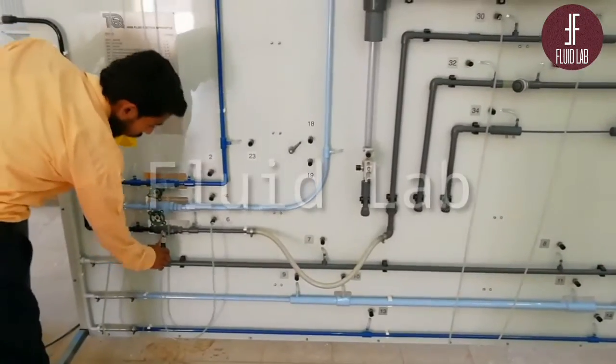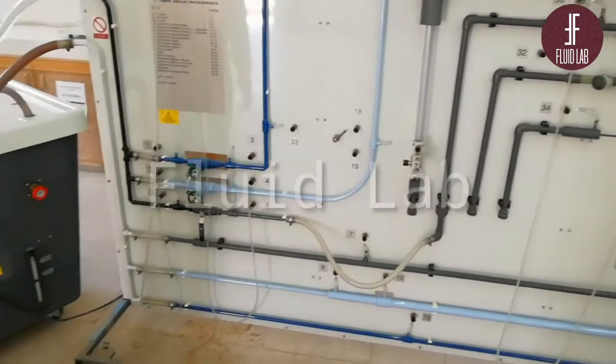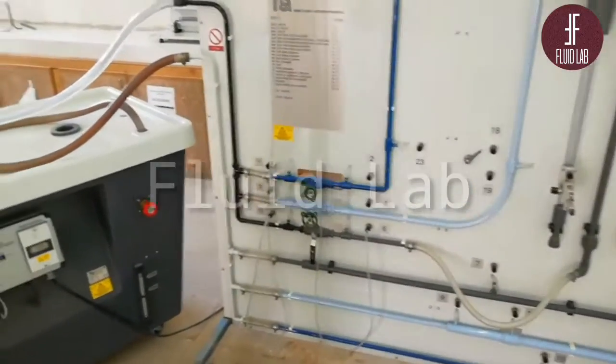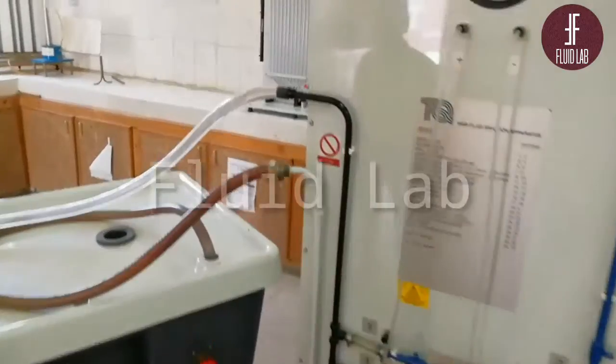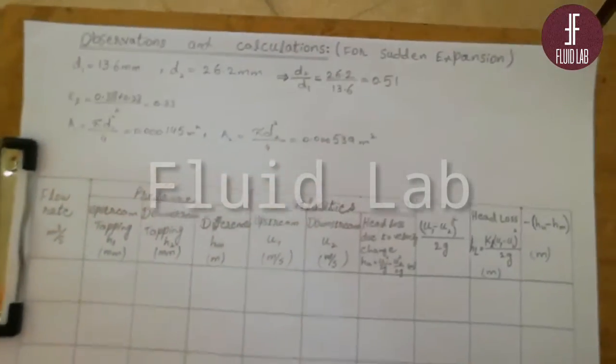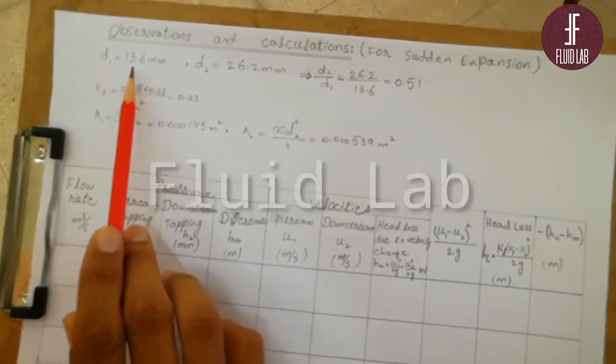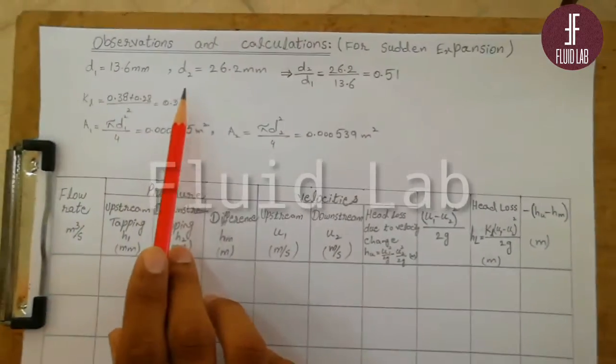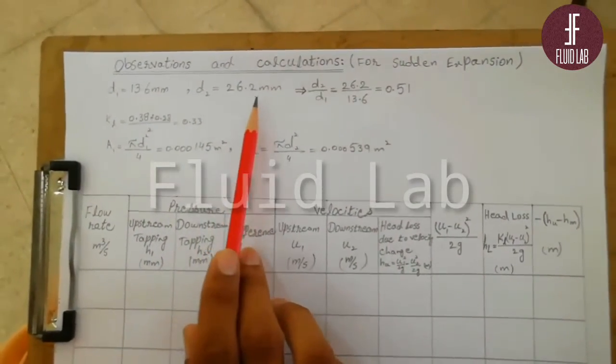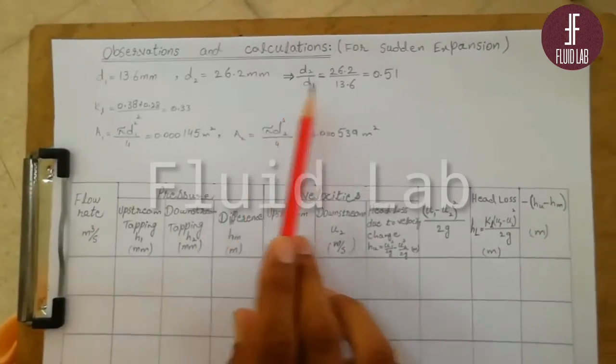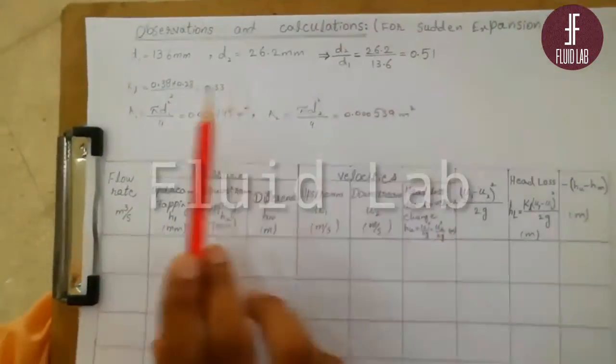The globe valve is fully opened and the globe valves are fully closed. Wait until all the air is removed. Here is our table for calculation for sudden expansion. Diameter D1 is 13.6 mm and diameter D2 is 26.2 mm, and the ratio is 0.51.